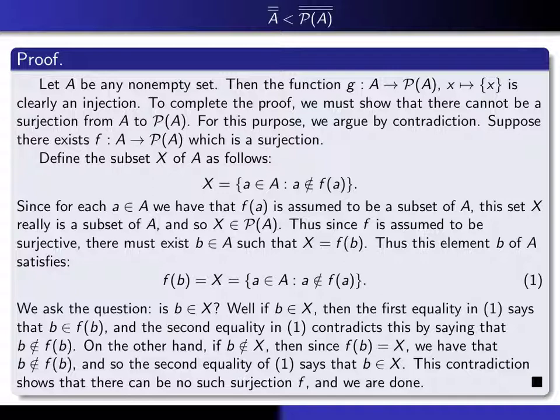So now we have this subset X of A, and so X is an element of the power set because X is a subset of A, and so since little f is assumed to be surjective, there has to exist a b such that X is equal to f of b. Now we're going to get a contradiction from that fact. So this element of b satisfies f of b equals X, that's just this thing here, and here I'm just reminding you what X is. So now we ask the question, is b an element of that set X? Right? We know b is an element of A, so either it's in X or it's not.